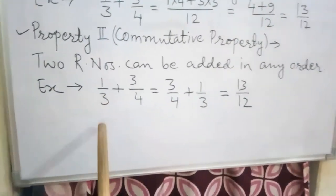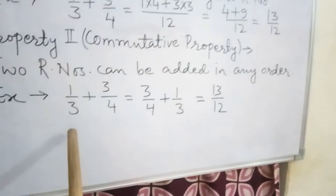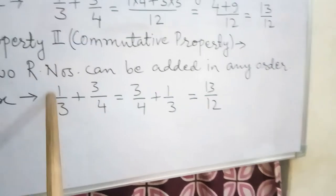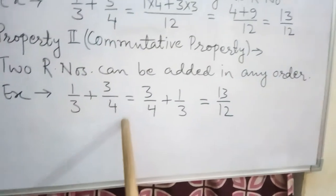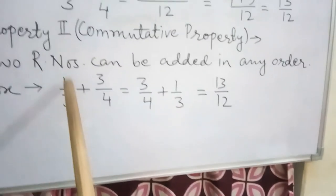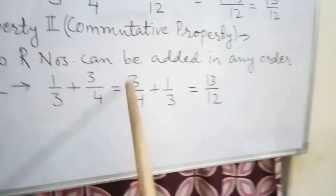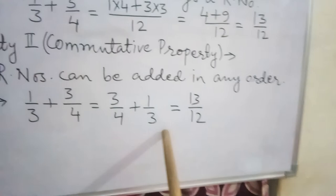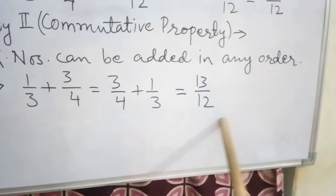That means, I would like to explain that these two rational numbers, 1 by 3 and 3 by 4, are added in different ways. That is 1 by 3 plus 3 by 4, or 3 by 4 plus 1 by 3. In both cases, the results are the same.